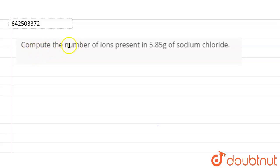Compute the number of ions present in 5.85 grams of sodium chloride. So what we need to tell in this question is the number of ions present in 5.85 grams of sodium chloride.